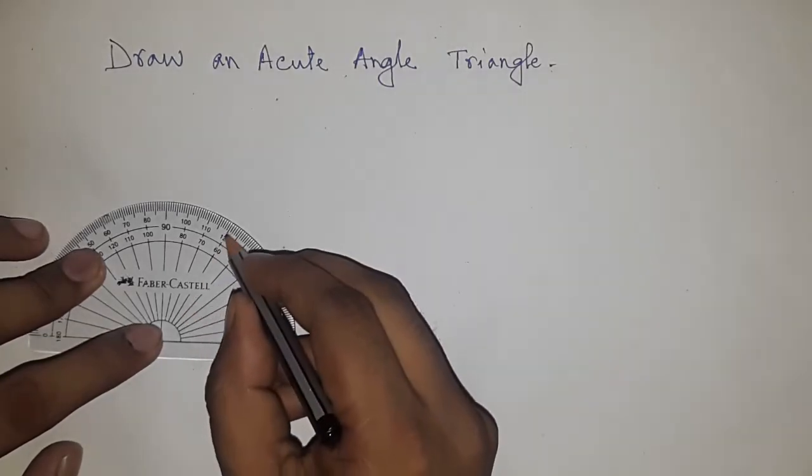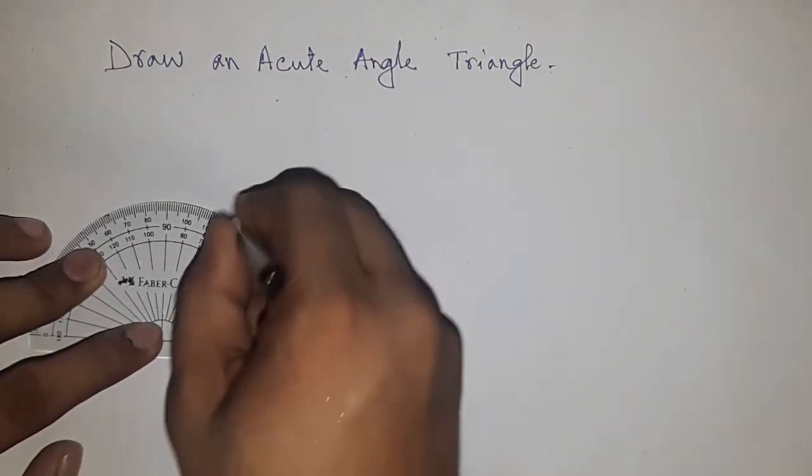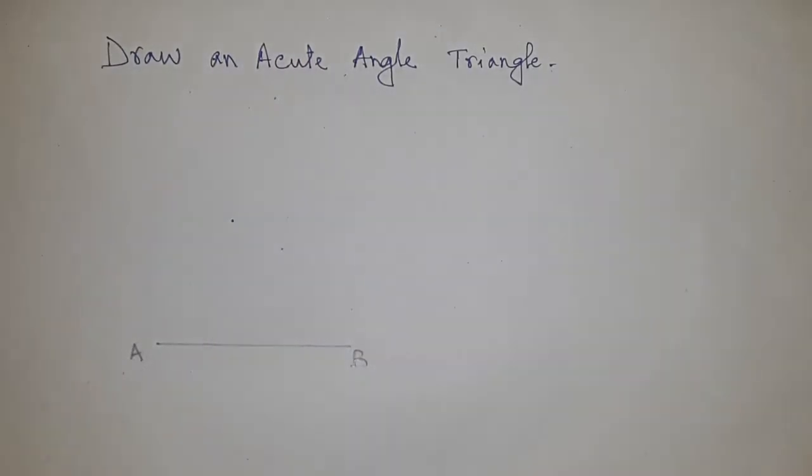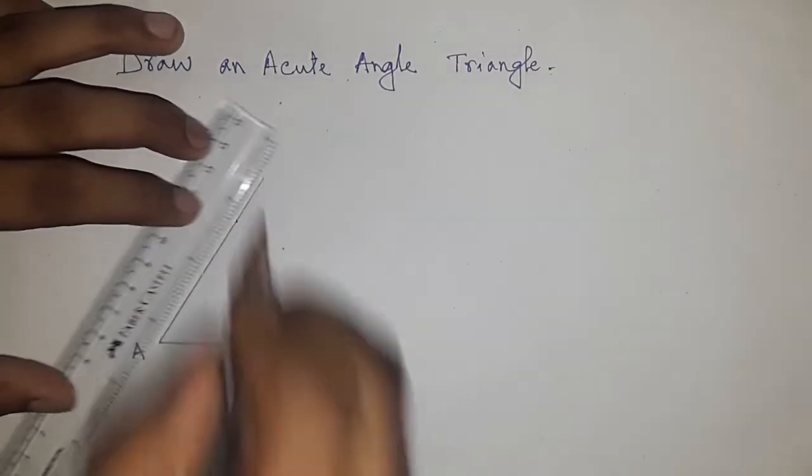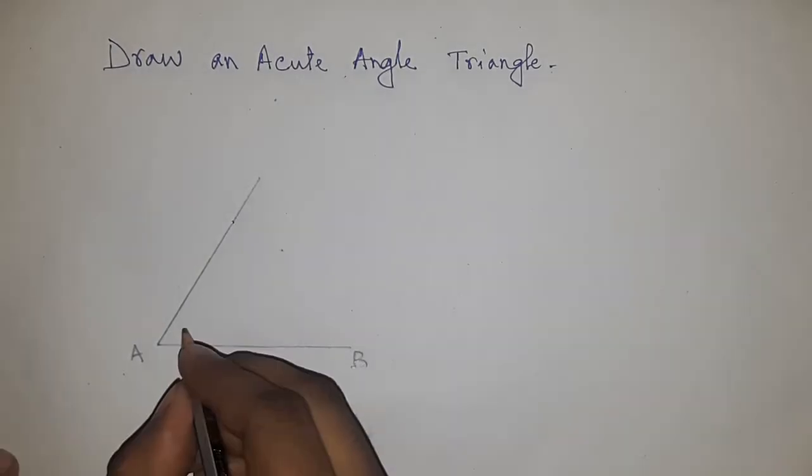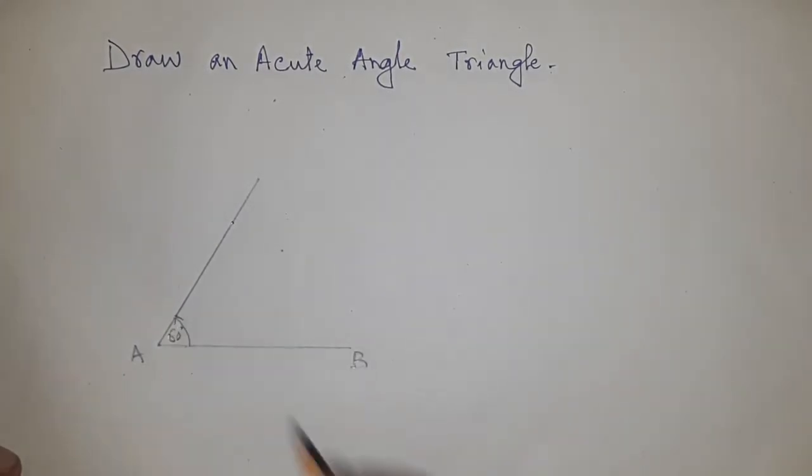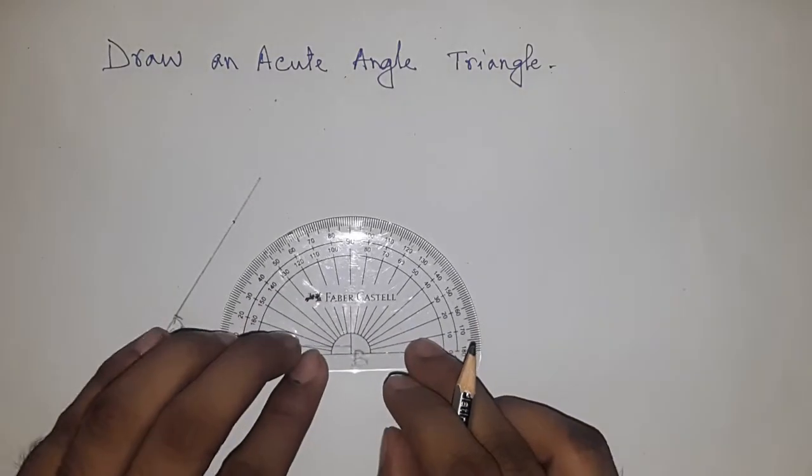By using the protractor, this is 60 degrees. Next, join this line. So we got a 60-degree angle at A.